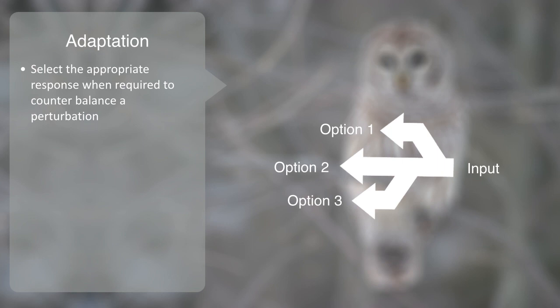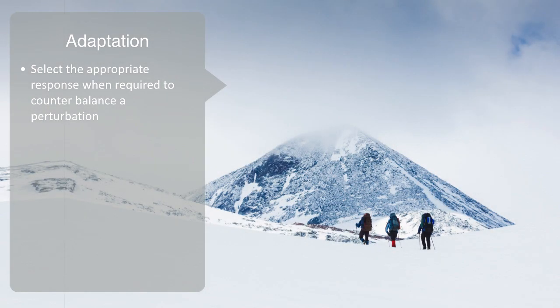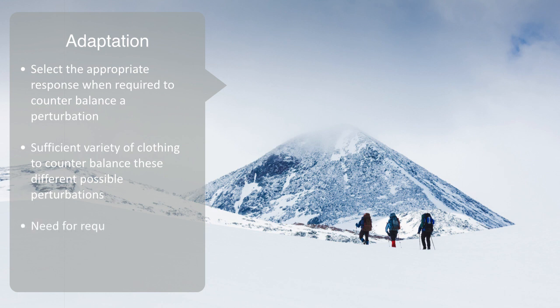To illustrate this, we might think about going hiking on a mountain. In this situation, one needs to be aware of the possible states to the weather that this environment might present and have sufficient variety of clothing to counterbalance these different possible perturbations in order to maintain one's body within its critical temperature parameters that are required for its continued functioning. If I do not have what is called the requisite variety in order to adapt, then this environment might present me with a blizzard for which I do not have the thermal clothing to maintain my body, and in such a case, my body's functionality may be severely or critically degraded.